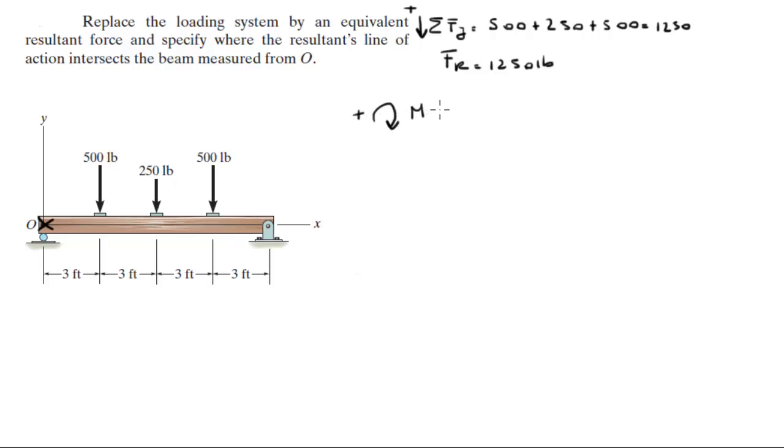The moments are equal to 500 times 3 (the moments from O) plus 250 times 6 plus 500 times 9, which gives us a total moment of 7500 foot-pounds.